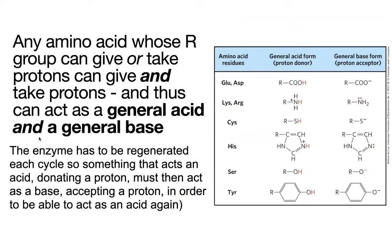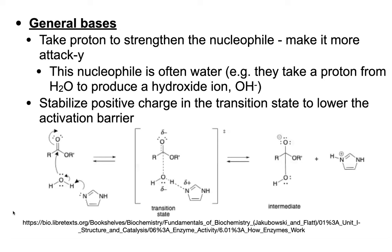In order to keep doing things over and over — speeding up reactions without getting used up — the enzyme needs to reset. If it gives a proton, it has to be able to take a proton back in order to give one again. For general bases, a base steals a proton, and by doing so it strengthens the nucleophile — generating concentrated negative charge that makes the nucleophile less happy and more reactive. In this case, a histidine deprotonates water, which then goes on to attack an electrophile. We call this general base catalysis, because we need this amino acid to activate the water, but it doesn't have to be a histidine — any general base would work.